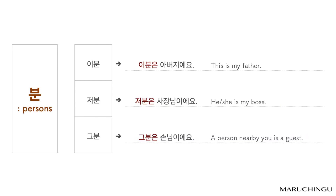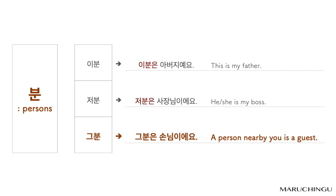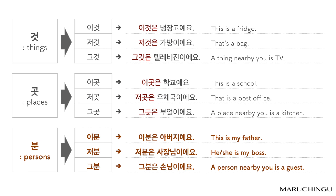분 (persons): 이분은 아버지예요. 저분은 사장님이에요. 그분은 손님이에요. 것, 곳, 분 — these are the three main noun categories used with 이, 그, 저.